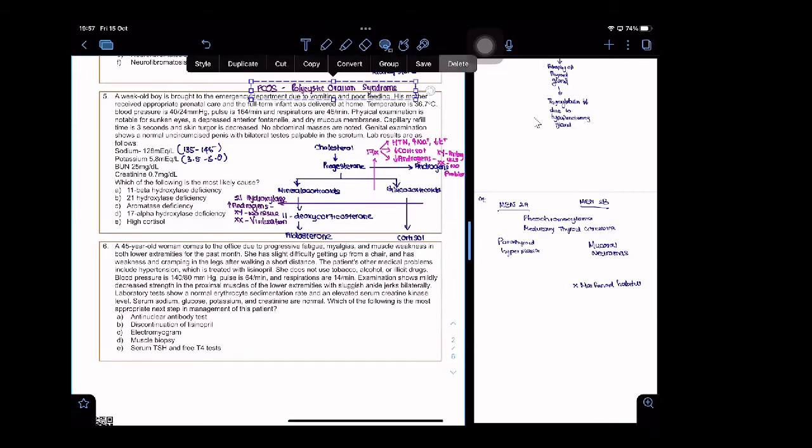Now we have high androgens. What about the other hormones? Low aldosterone. What happens? Hypotension because of sodium being low. Low sodium means hypotension, and you will also get high potassium.